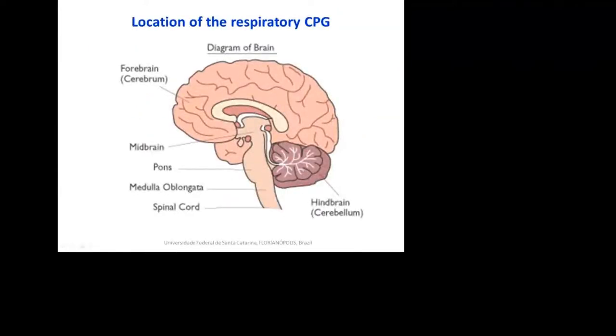The rhythmic activity which drives breathing in mammals is generated by a special neural circuitry in the brain. We call this structure the respiratory central pattern generator, or just CPG. The respiratory rhythm generating circuits reside in the lower brainstem, more specifically in the medulla and pons.